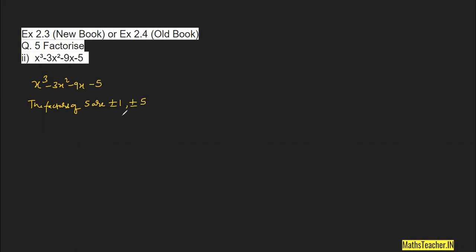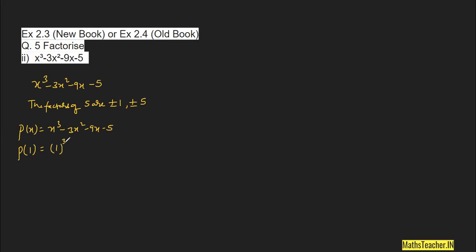We have to check with plus or minus 1 and plus or minus 5 — so exactly four factors: plus/minus 1 and plus/minus 5. What we need to do is check whether each one is a zero of the polynomial. p(x) = x³ − 3x² − 9x − 5. I'm going to put the values +1, −1, +5, then −5 to find which is actually a zero. First, I'll put x = +1.